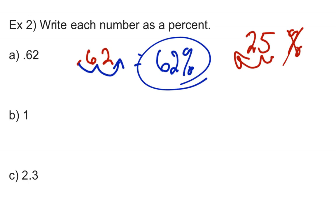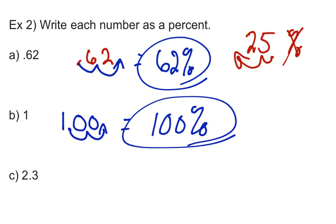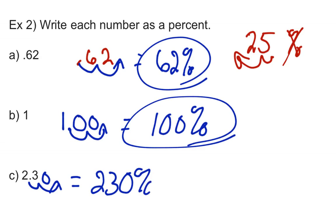Go ahead and try parts B and C — pause the video. For the whole number 1, that's just 1.0. Moving the decimal two places to the right — adding a zero — gives me 100%. That should make sense because if you have one whole of anything, you have 100% of it. For 2.3, moving the decimal two places to the right means I add one zero, giving me 230%.